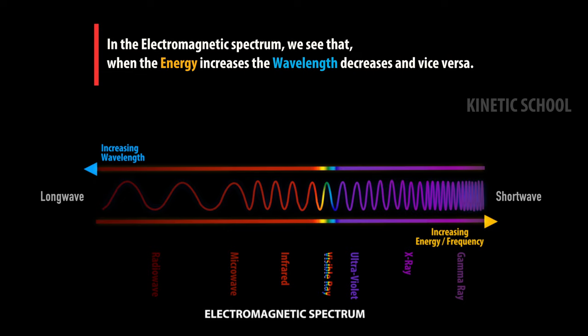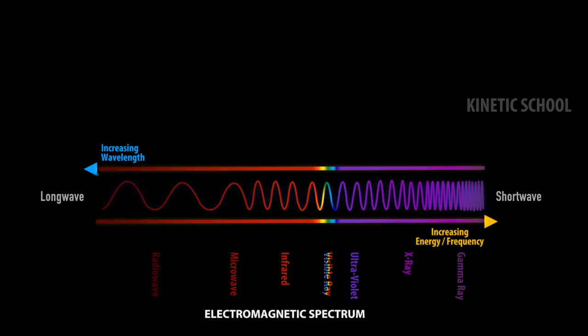In the electromagnetic spectrum, we see that when the energy increases, the wavelength decreases, and vice versa. That means energy is inversely proportional to wavelength.